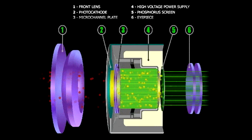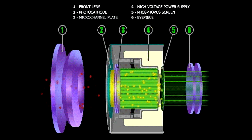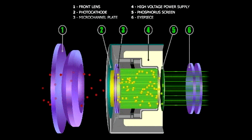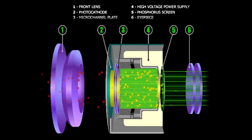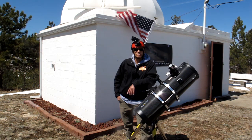Photons from a dimly lit source enter the objective lens on the left and strike the photocathode plate. The photocathode, which is negatively biased, releases electrons which are accelerated to the higher voltage micro-channel plate. Each electron causes multiple electrons to be released from the micro-channel plate, and the electrons are drawn to the higher voltage phosphorus screen, causing it to produce photons of light viewable through the eyepiece lens. In short, it's a major game-changer for astronomy.